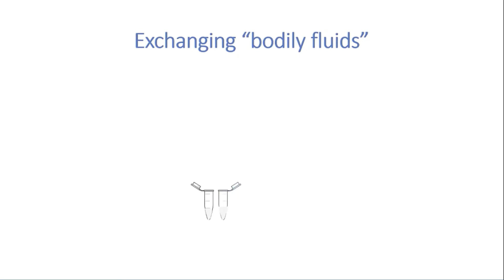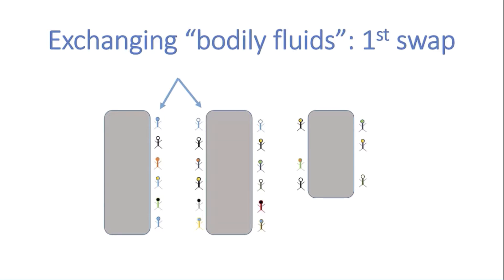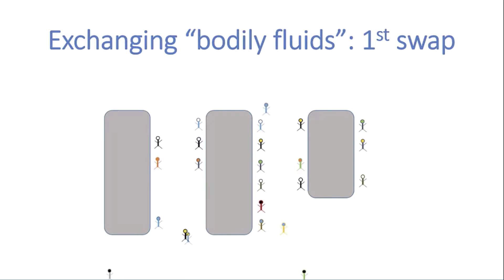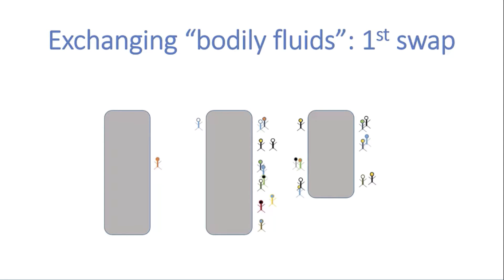During the first swap of bodily fluids, students on the left-hand side of the screen move over to the right-hand side and exchange bodily fluids as explained. As students exchange bodily fluids, they also tell each other what number tube they have. When they return to their bench, they write that down.